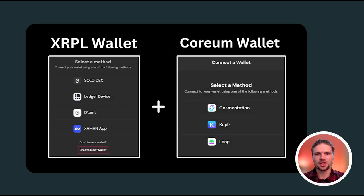To complete this action, we'll need an XRP Ledger wallet, such as the Solodex wallet, and a wallet compatible with the Corium network, such as the Leap wallet. So with that said, let's dive right in.